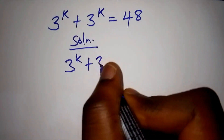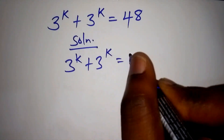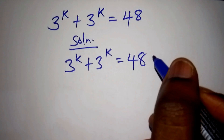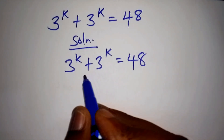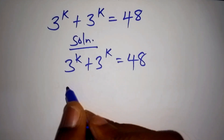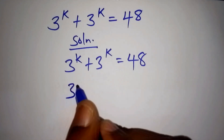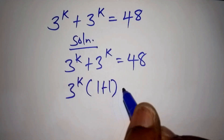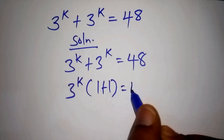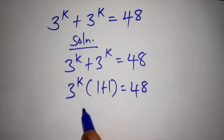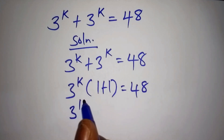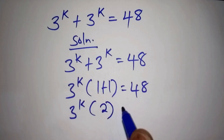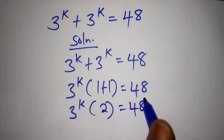So 3 to the power of k plus 3 to the power of k is equal to 48. In the first place, we factorize: 3 to the power of k plus 3 to the power of k can be written as 3 to the power of k into bracket 1 plus 1, which is equal to 48.